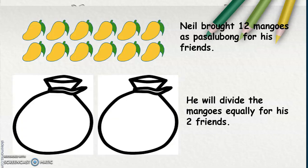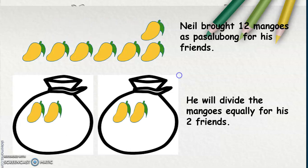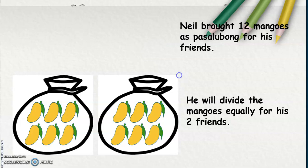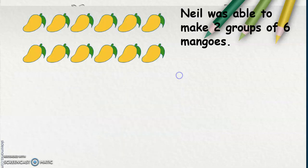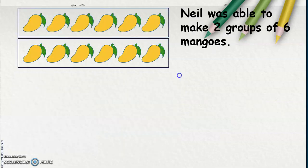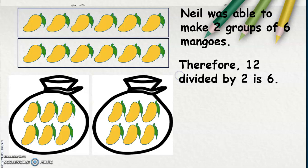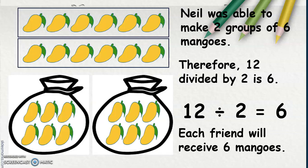Now, let's count: 1, 2, 3, 4, 5, 6, 7, 8, 9, 10, 11, 12. Neil was able to make 2 groups of 6 mangoes. Therefore, 12 divided by 2 is 6. Each friend will receive 6 mangoes.